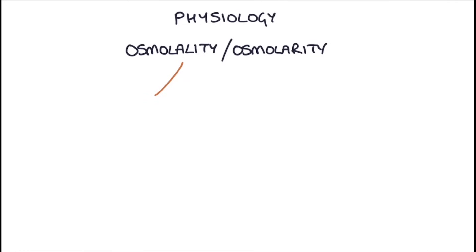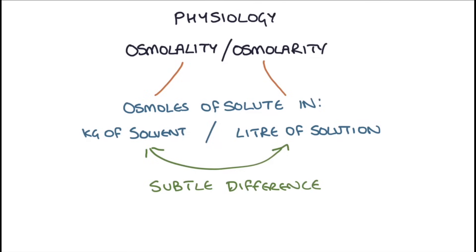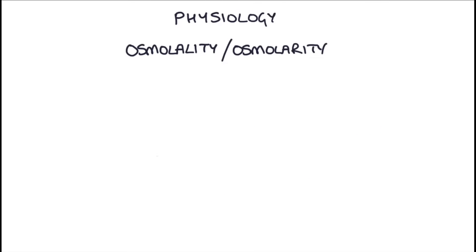Osmolality is technically the number of osmoles of a solute in a kilogram of solvent, and osmolarity is the number of osmoles of a solute in a liter of solution. This is a very subtle technical difference, but it doesn't really matter in everyday practice. When we talk about plasma osmolality or osmolarity, we're basically talking about the concentration of solutes, which are dissolved substances in the blood.